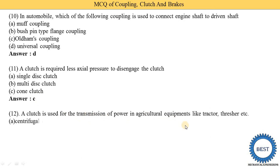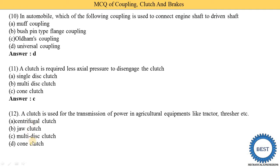Which clutch is used for the transmission of power in agriculture equipment like tractors and threshers? Option A: centrifugal clutch, option B: jaw clutch, option C: multi-disc clutch, option D: cone clutch. The correct answer is the multi-disc clutch. Tractors and threshers are heavy vehicles, and in heavy vehicles we need more friction, so multi-disc clutch is used.